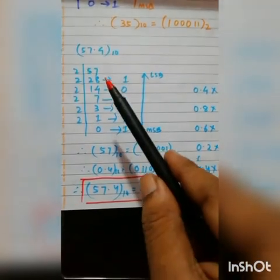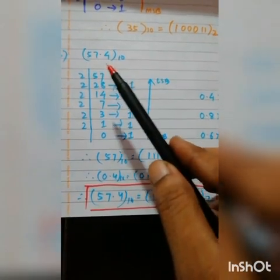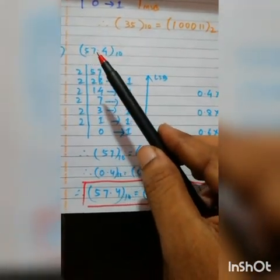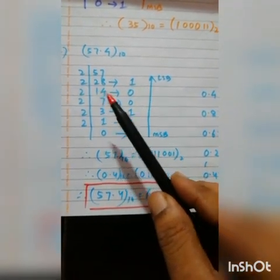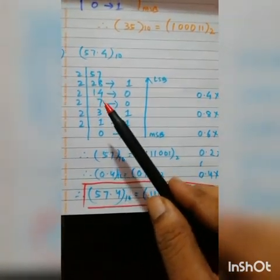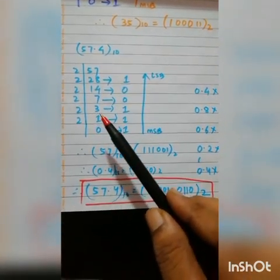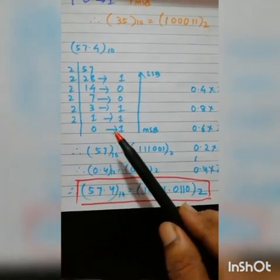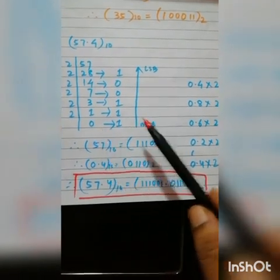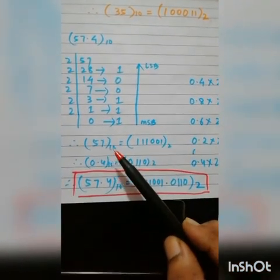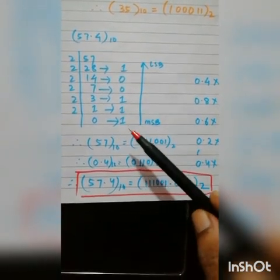Now if the decimal number has a fractional part, first solve the integer part by dividing by 2 as before. For 57: divide repeatedly — remainders are 1, 0, 0, 1, 1, 1 — so 57 equals 111001 in binary, always reading bottom to top. For the decimal part 0.4: multiply by 2. 0.4 × 2 = 0.8. Then multiply only the decimal part: 0.8 × 2 = 1.6, so integer part 1. Then 0.6 × 2 = 1.2, integer part 1. Then 0.2 × 2 = 0.4, integer part 0. Then 0.4 repeats — stop when repetition occurs.